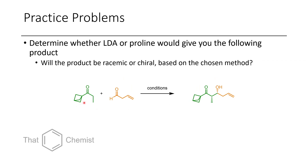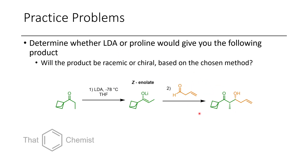In this next problem, we have this bicyclopentane-containing ketone, and it's treated with this pentenal in the presence of some sort of conditions. I wanted you to suggest whether LDA or proline should be used to prepare the desired product. If we use LDA, we'll typically get the Z-enolate, so we can end up getting the syn-alcohol product upon aldol reaction.